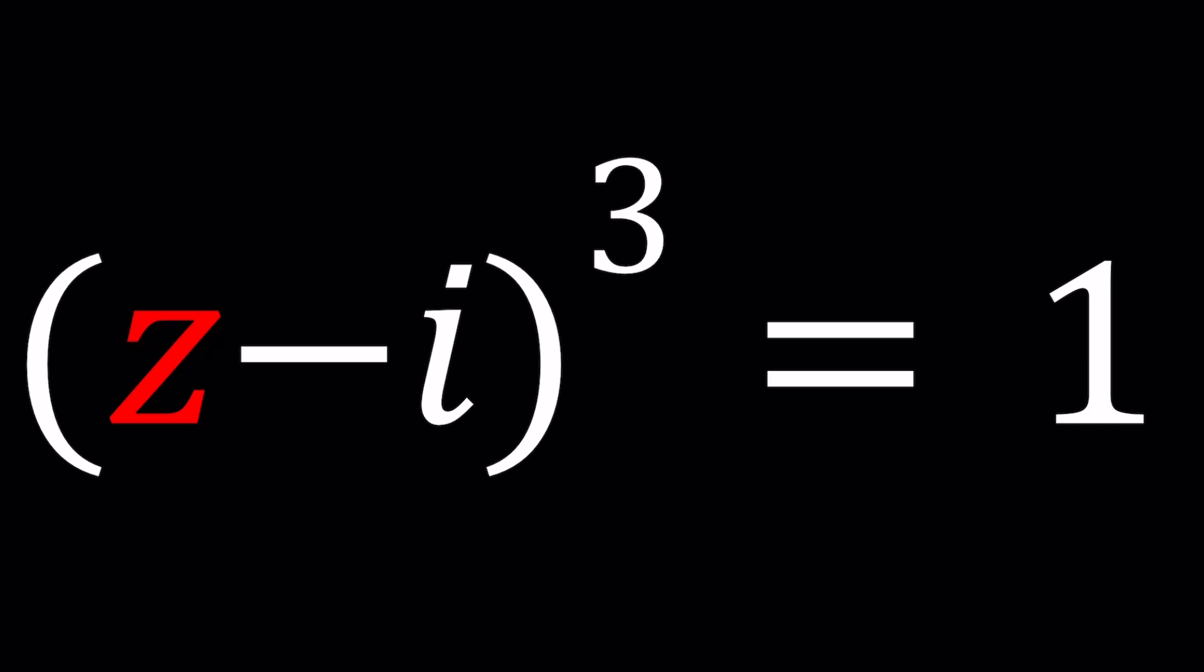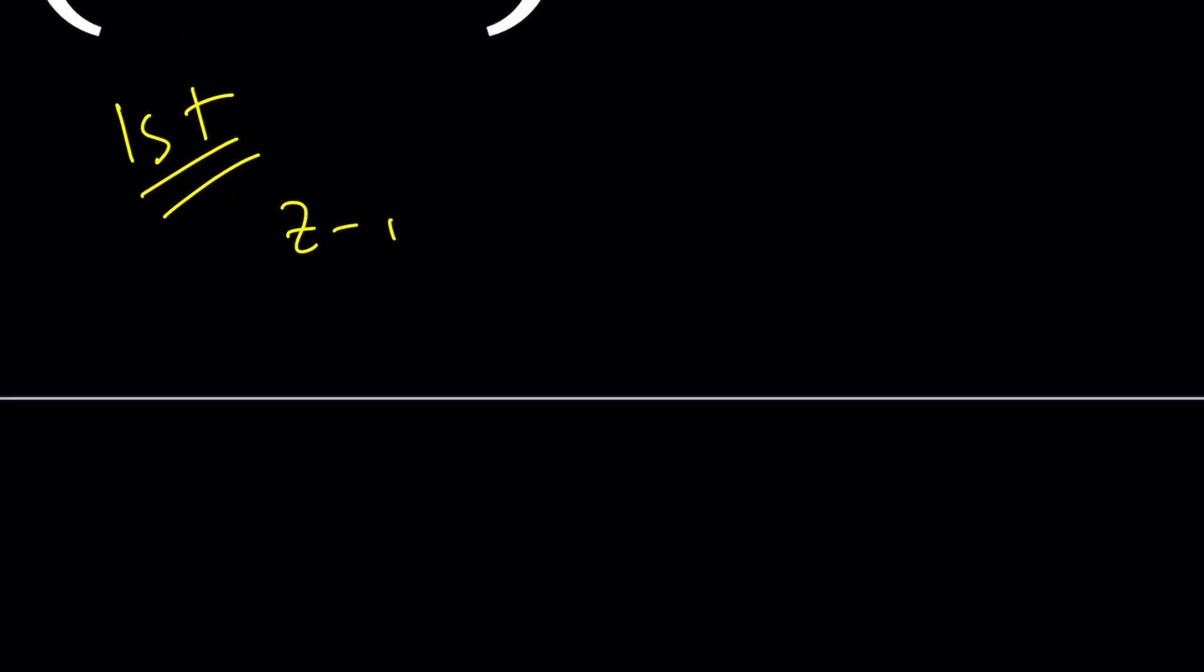First method, I have something cubed equals one, right? So let's go ahead and use the binomial theorem to expand Z minus I to the third power. This is probably not what many people would prefer, but let's just use it. It's just one of the methods.